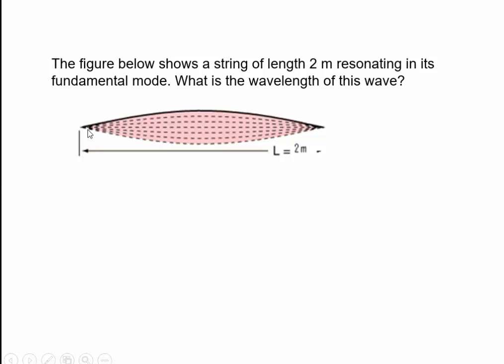A complete wave contains two full loops. Now, this is just one loop: a node, anti-node, a node. So this is half of a wavelength. Therefore, what is the wavelength of the wave? The wavelength of the wave is two times this length, which is four meters.